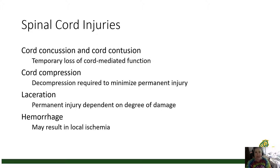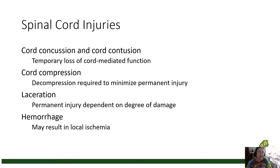Injuries to the spinal cord are classified as cord concussion or contusion — which results in a temporary loss of function of those myelinated nerve fibers — compression, which may be treatable by surgical decompression to prevent or minimize permanent injury, laceration or direct cutting of the spinal cord resulting in permanent injury since axons do not repair, and hemorrhage, which can lead to inflammation, compression, and local ischemia or infarction.